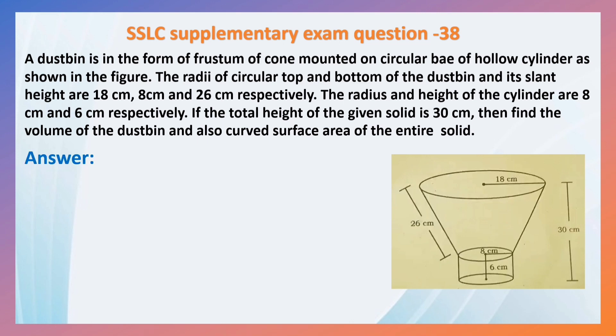Here what has been given for the frustum of cone? R1 is 18 cm, R2 is 8 cm, L is 26 cm. Height H, total height is 30 cm, height of the cylinder is 6 cm, so 30 minus 6 cm, that is 24 cm.